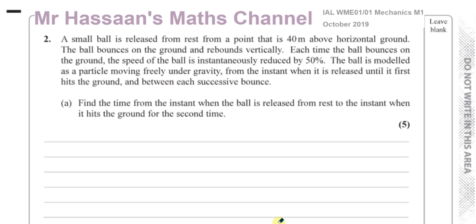Welcome back. I'm now answering question number two on Mr. Hassan's Maths channel of the International A-Level Mechanics M1 October 2019 paper from Edexcel. It says a small ball is released from rest from a point that is 40 meters above horizontal ground. The ball bounces on the ground and rebounds vertically. Each time the ball bounces on the ground, the speed of the ball is instantaneously reduced by 50%. Find the time from the instant when the ball is released from rest to the instant when it hits the ground for the second time.